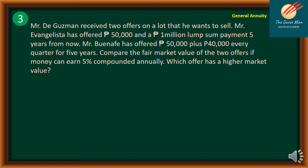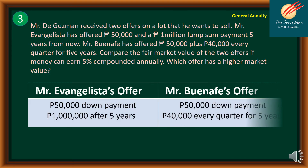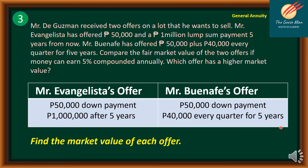Example number three: Mr. Degusman received two offers on a lot he wants to sell. Mr. Evangelista offered 50,000 pesos down payment and a 1 million lump-sum payment five years from now. Mr. Buenape offered 50,000 pesos down payment plus 40,000 every quarter for five years. Money can earn 5% compounded annually. Which offer has the higher market value? In tabular form: Mr. Evangelista's offer is 50,000 down and 1 million lump-sum after five years; Mr. Buenape's offer is 50,000 down and 40,000 every quarter for five years.